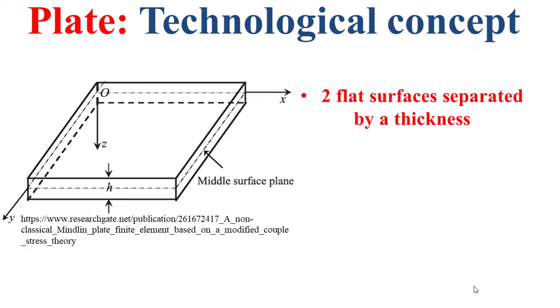the plate can be simply seen as two flat surfaces separated by a certain thickness and the contour of these two flat surfaces can be straight like square or rectangle and curved like circle or ellipse. And you can note also that there is a certain middle surface and this middle surface will represent the whole plate since the thickness is negligible compared to the other dimensions as I said before.